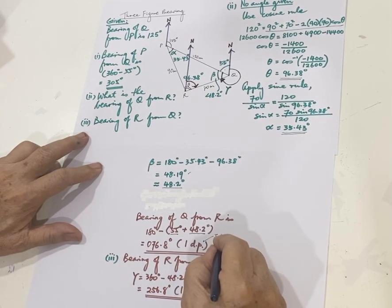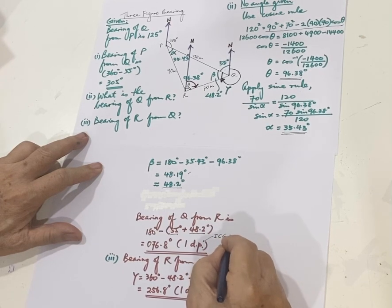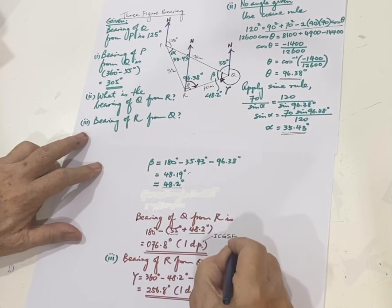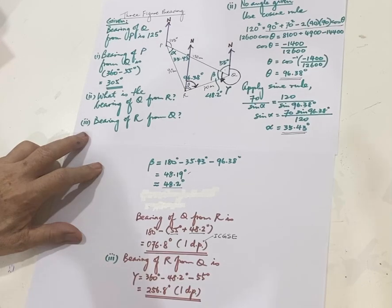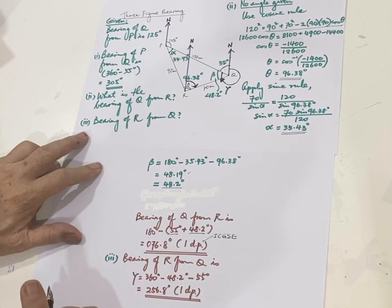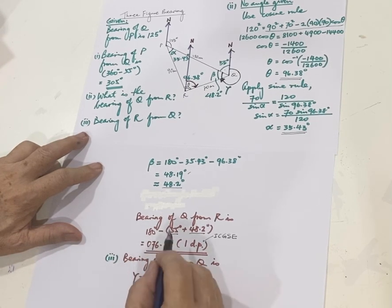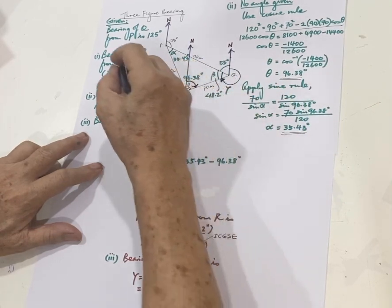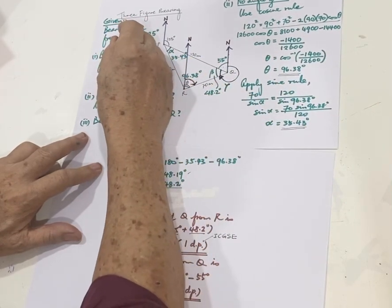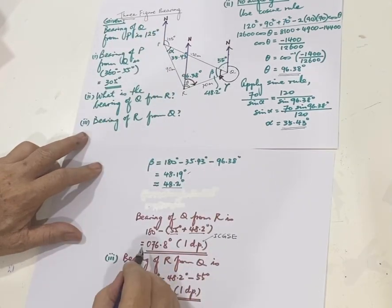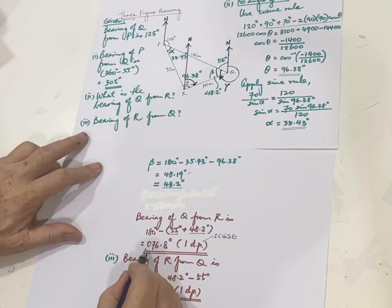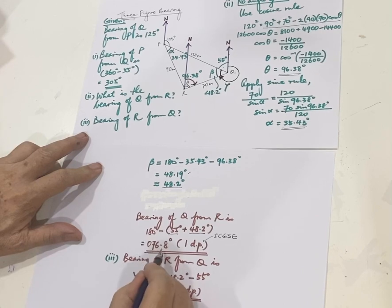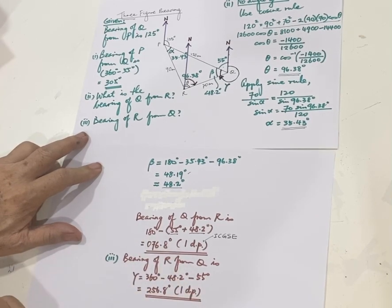So IGCSE people, O-level people, right? Please remember, inexact angles must be given to one decimal place unless otherwise stated. Okay, and so the bearing of Q from R will be this one. But remember, we are doing three-figure bearing. So I have to add a zero in front to make it three-figure. Never mind about the decimal point.